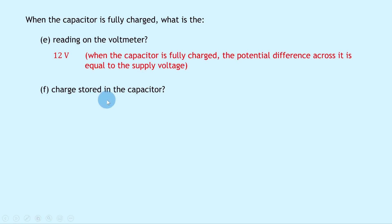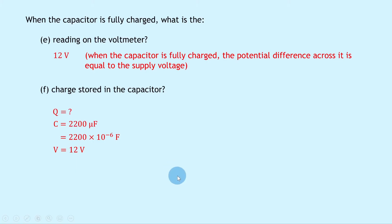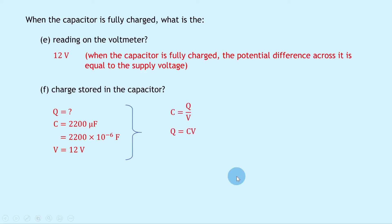For part F, when the capacitor is fully charged, what is the charge stored? We're trying to find charge Q. We know capacitance C is 2200 microfarads, or 2200×10⁻⁶ farads, and the potential difference V is 12 volts when fully charged. Using C equals Q over V, rearranging gives Q equals CV. Substituting: 2200×10⁻⁶ times 12 gives a final answer of 2.6×10⁻² coulombs.